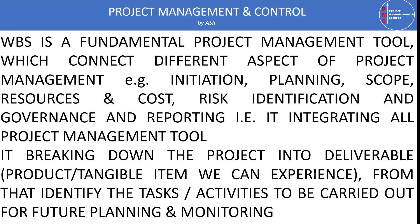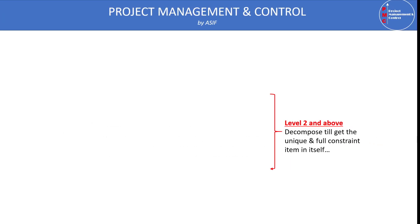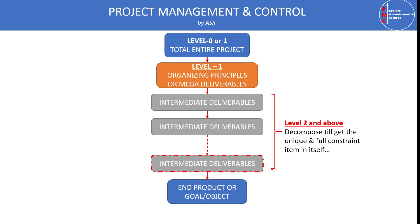From that deliverable or product, we identify further tasks and activities which can be carried out for further planning and monitoring of the projects. If you define the work breakdown structure in a pictorial way, you can see that we have level 0 or level 1 which is the total entire project. The next level will be level 1 or level 2, which is the organizing principle or mega deliverables, on which we are further decomposing our project.